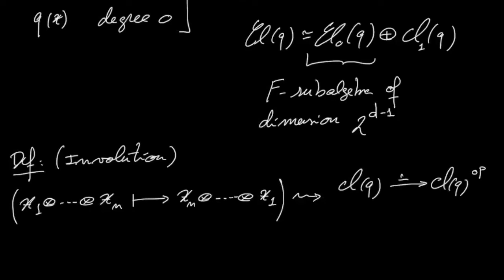So you really reverse the order, and this leads actually to an isomorphism between the Clifford algebra and its opposite, as in the case of quaternion algebras, and also this restricts to the degree zero part and also gives you an isomorphism.